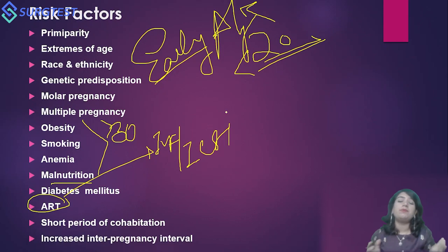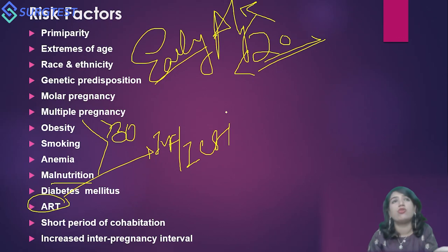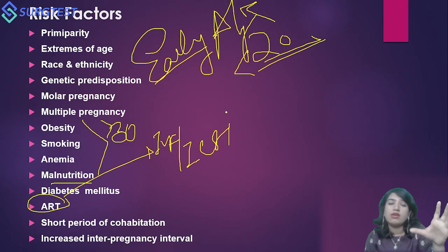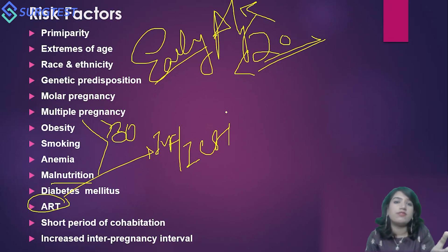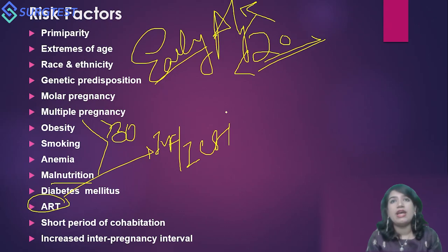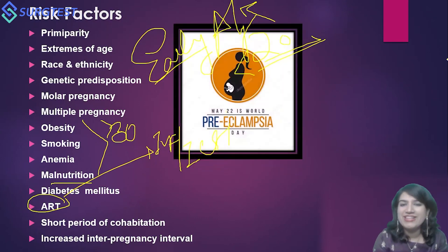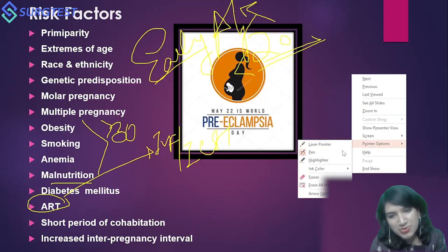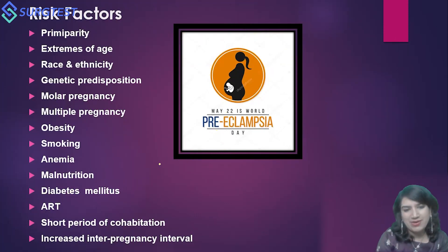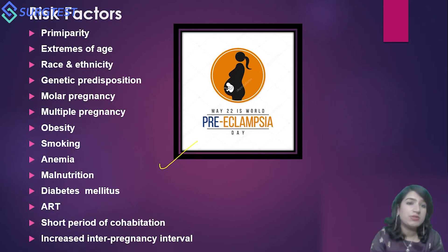An increased inter-pregnancy interval is also a risk factor. For example, if the first pregnancy was in 2002 and the next in 2011 or 2012, this long inter-pregnancy interval of 10 to 12 years suggests the woman has lost immune tolerance to those sperm antigens and is again prone for PIH or preeclampsia. As a general knowledge point, May 22 has been declared as World Preeclampsia Day.